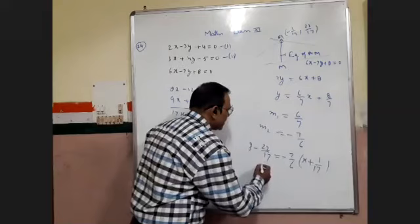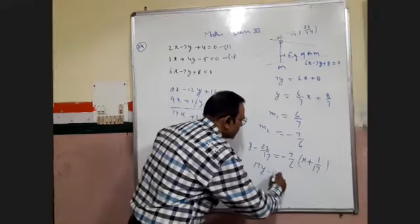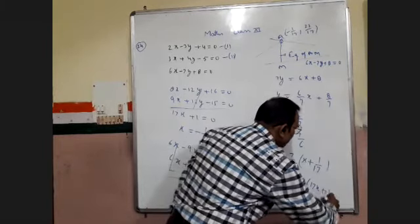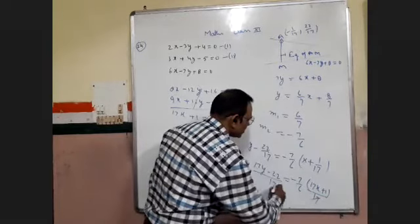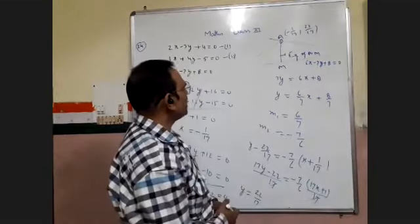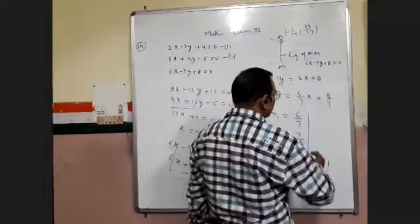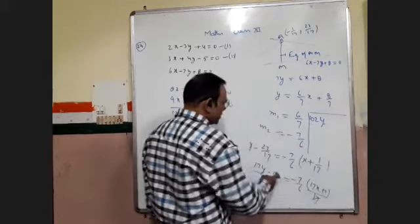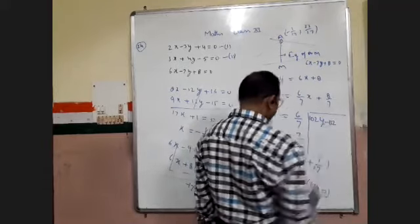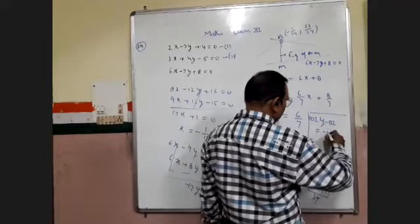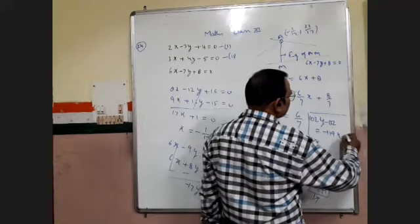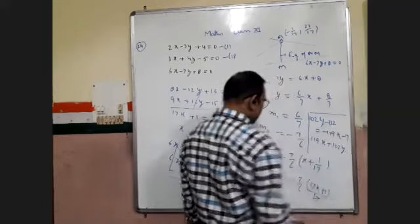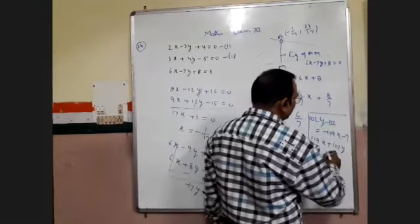Multiplying through by 17, we get 17y minus 22 equal to minus 7 upon 6 times (17x plus 1). Multiplying both sides by 6 and expanding, we obtain 102y plus one hundred two y on the left side, and on the right side 132, giving us minus seven times quantity, leading to the final equation with 125y.